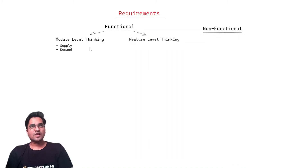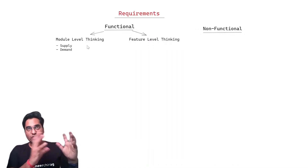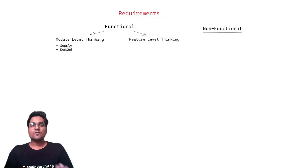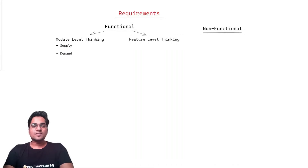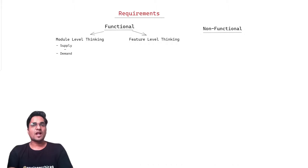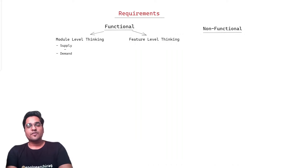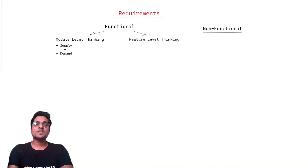In terms of functional requirements, we think from a broader perspective and then get into feature-level thinking. First is module-level — what are the different modules in Netflix — then feature-level thinking. When we say module-level, it's good to dive into both dimensions: supply and demand. It depends on where the interviewer wants you to go. In case of Netflix, the end customer doesn't mostly have the capability to upload videos — the supply is where the input source is coming from, which is videos and TV series.